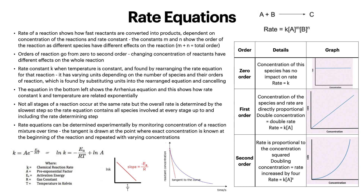Then we have the rate equation. Rate of reaction shows how fast reactants are converted into products, dependent on the concentration of the reactants and rate constant. The constants M and N in the equation show the order of the reaction, as different species have different effects on the reaction. M plus N is the total order of the reaction. Orders of the reaction go from zero to second order, and changing concentration of reactants has different effects on the whole reaction. You can see in the table on the right-hand side more information about what zero, first, and second order are. Zero order: concentration of the species has no effect on rate, so rate equals the constant K — it's just a straight line on the graph. First order: concentration and rate are directly proportional, so doubling concentration means doubling the rate. Second order: rate is proportional to concentration squared, so doubling concentration means rate increases by four.